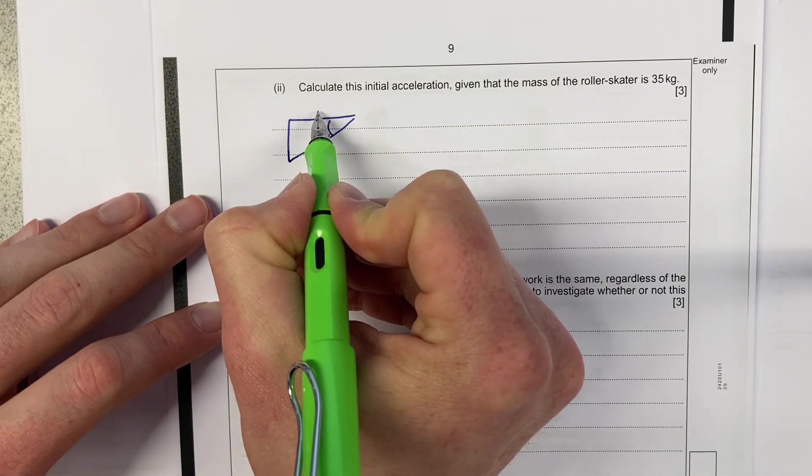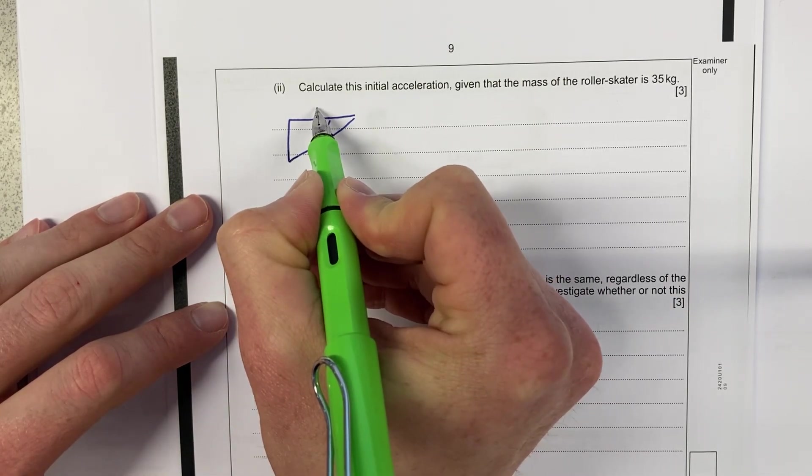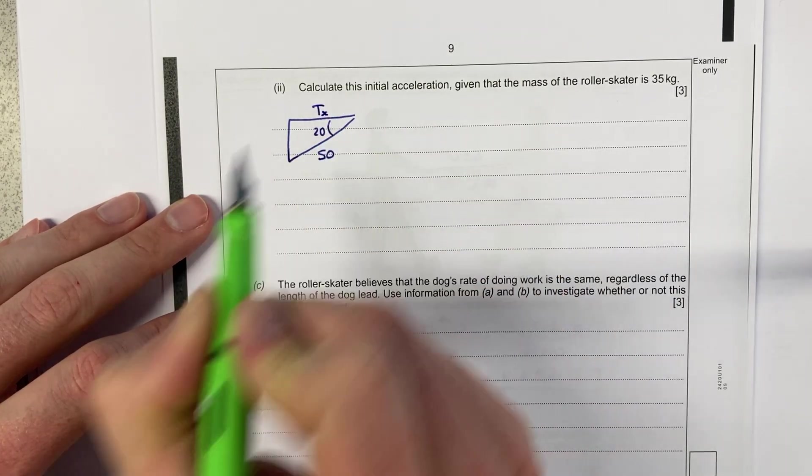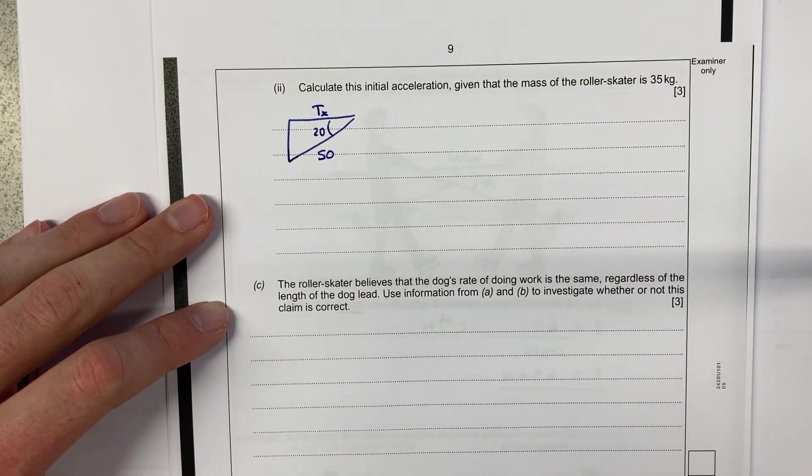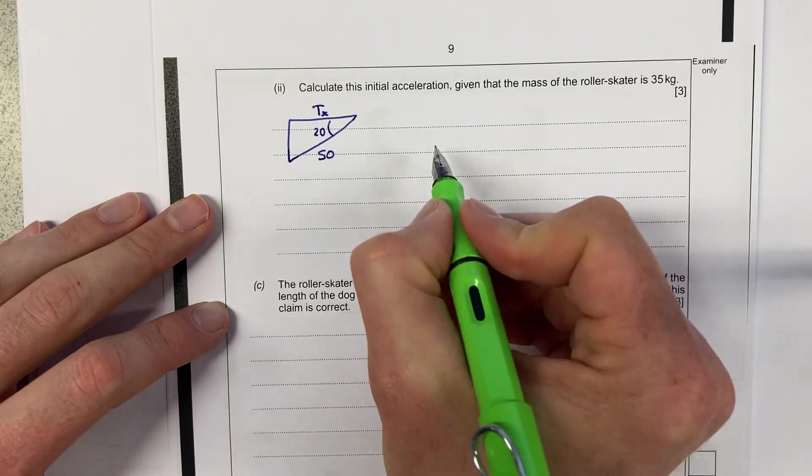My tension force is 50. This here, my adjacent force here is, I don't know actually, that's the tension in the x direction, or the force acting on the skater. That's what I'm trying to find out. So let's quickly do that.